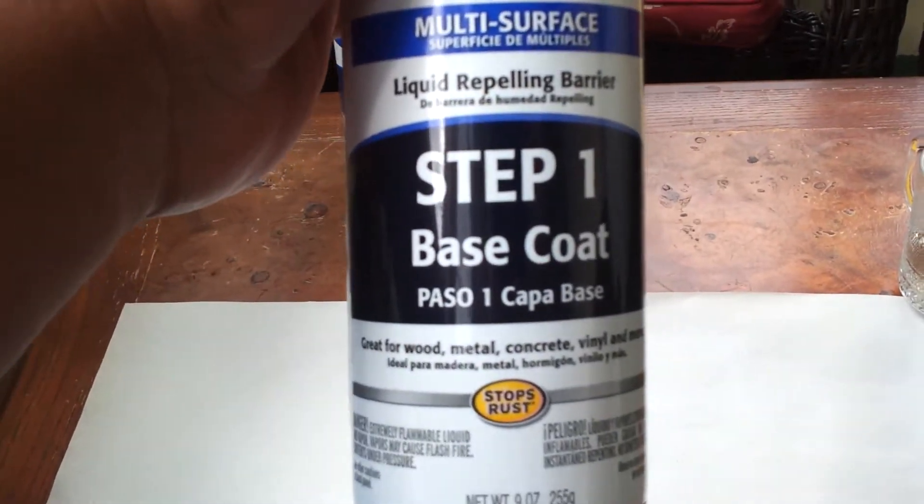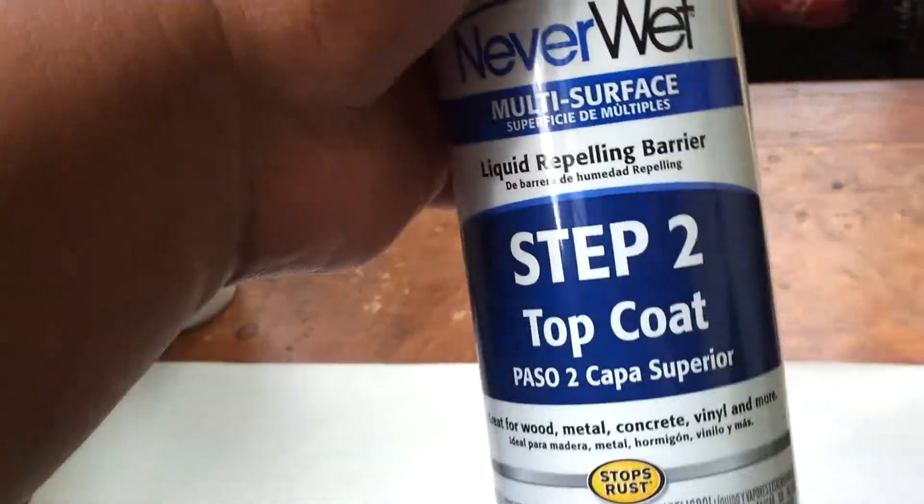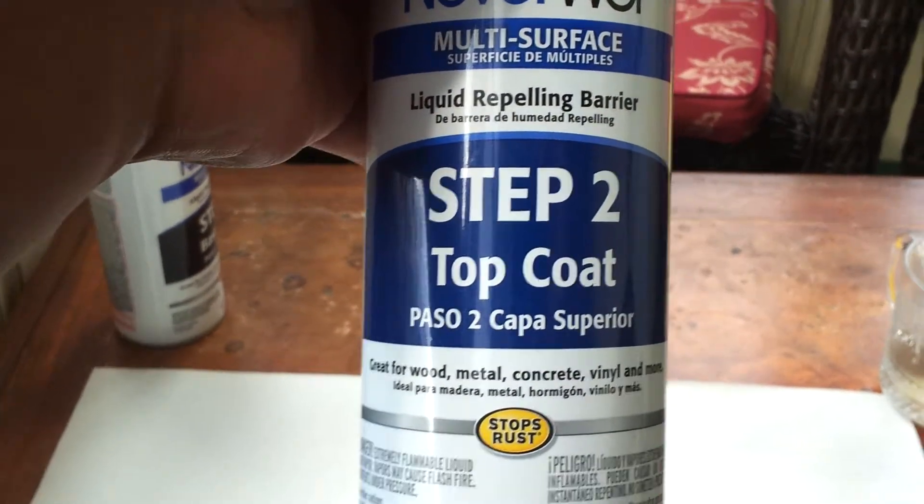I put two coats of this product on a piece of paper. The right side of the paper is coated with the Rust-Oleum and the other side is not. You need to put one coat of the first step base coat and multiple light coats of the step two top coat. Okay, let's